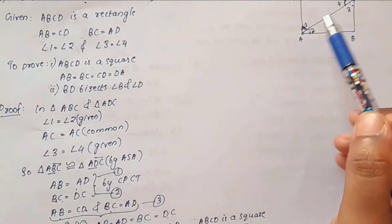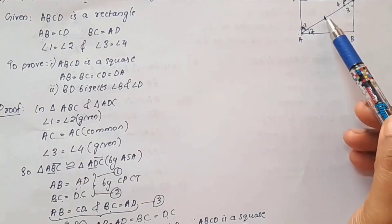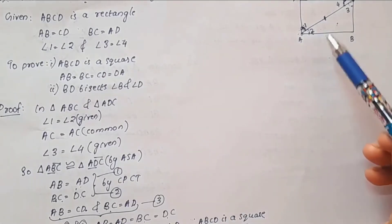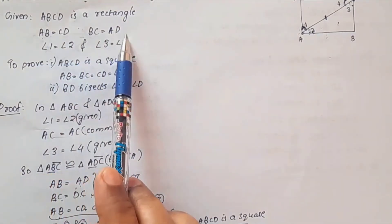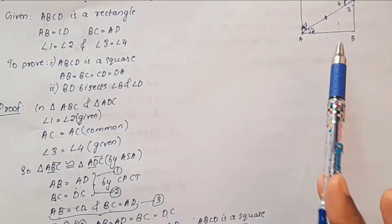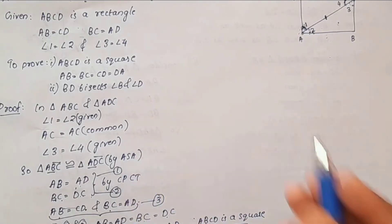To summarize: angle 1 and angle 2 are given, angle 3 and angle 4 are given, and AC is equal to AC. The two triangles are congruent, so the corresponding sides are equal: AB equals AD, BC equals DC, AB equals CD, and BC equals AD. Since ABCD is a rectangle with all four sides equal, ABCD is a square.